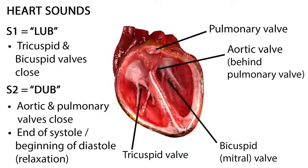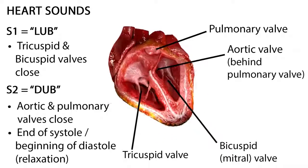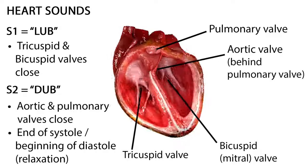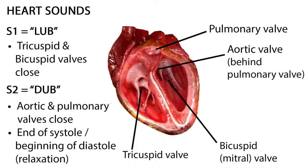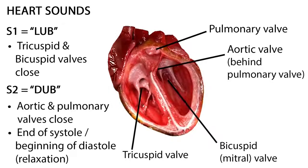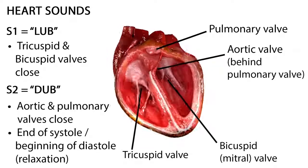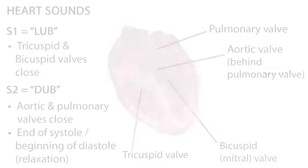As the tricuspid and bicuspid valves snap shut, the pulmonary and aortic valves just opened — this is the beginning of systole, or contraction of the ventricles. As the ventricles contract, blood is pumped through the pulmonary valve leading to the lungs, and the aortic valve leading to the aorta and rest of the body. These valves then snap shut, making the second heart sound, S2, or 'dub' in 'lub dub.' This is the end of systole and the beginning of diastole. When listening over the precordium, there are five precordial landmarks where you can best hear sounds from each heart valve.